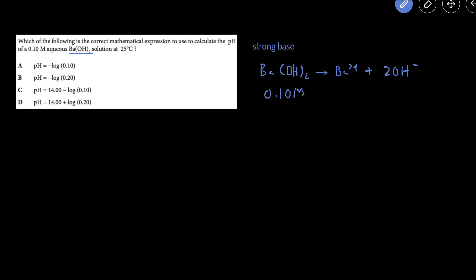So if you have 0.1 molar of this, since the strong base completely dissociates based on the mole-mole ratio, you're gonna have 0.2 molar of hydroxide.